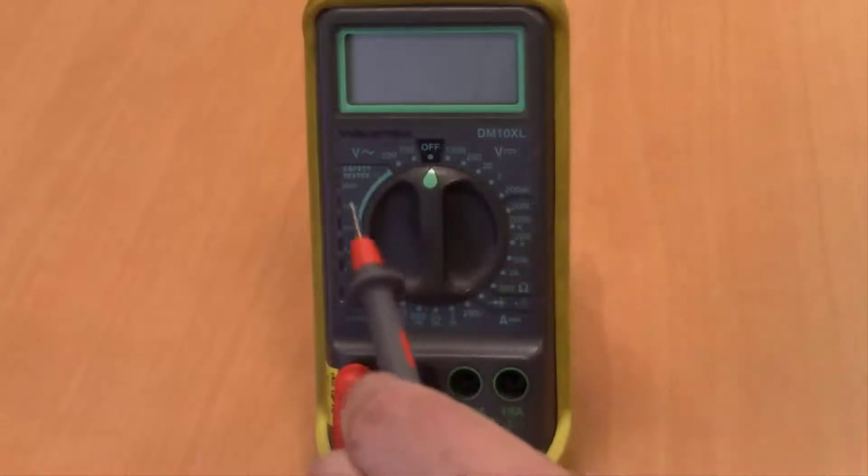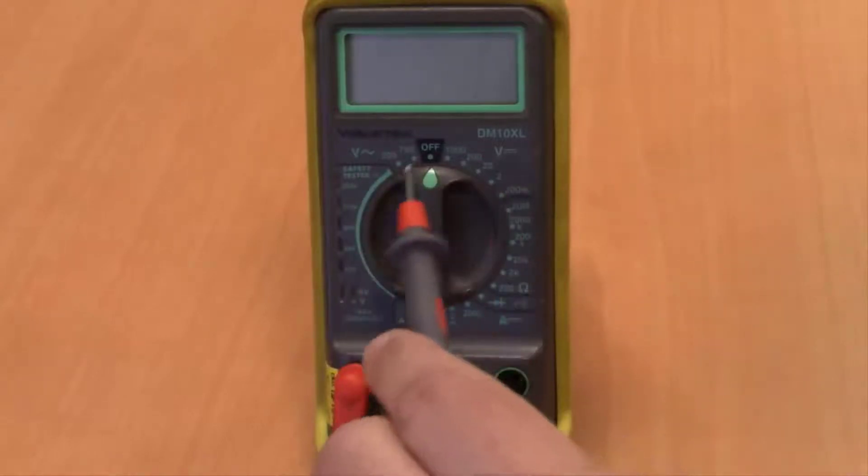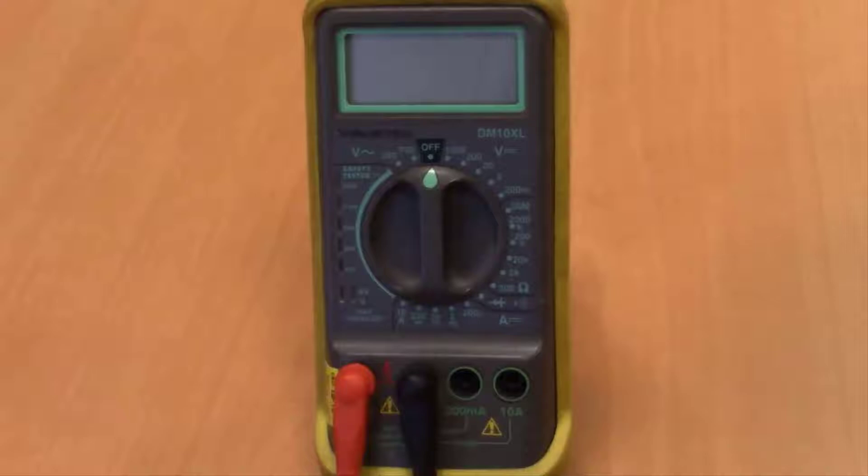Above that you have your dial and you can see there's a lot more selections on this one to make. You have to be on the closest setting to what you perceive to be measured in the application that you're working on. If you do try to read something and you're getting an overload, you would just click up to the next one until you are within range of that application.